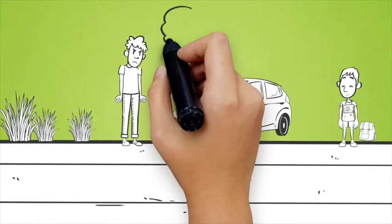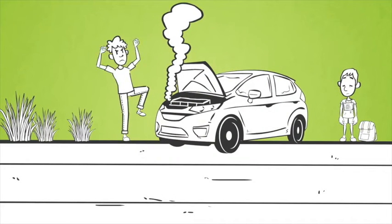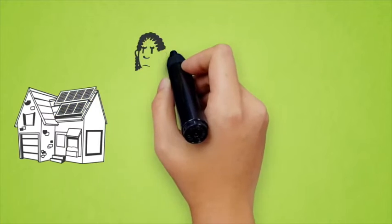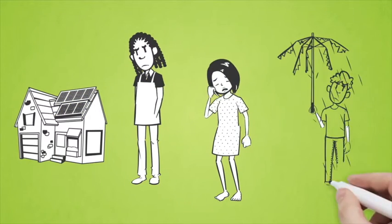Sometimes, things outside of our control can make it difficult to get students to school. For instance, unstable housing, loss of a job, health problems, or other personal issues.